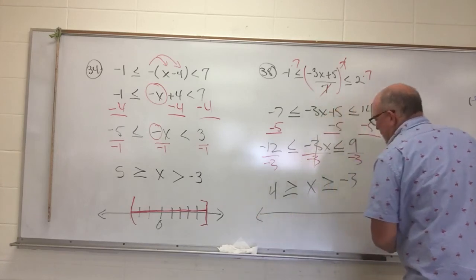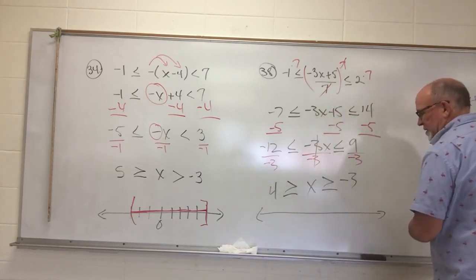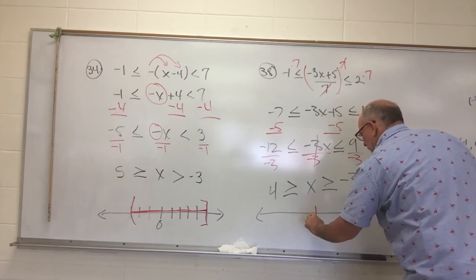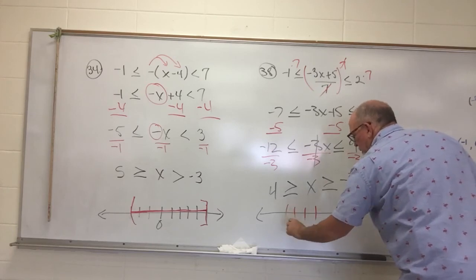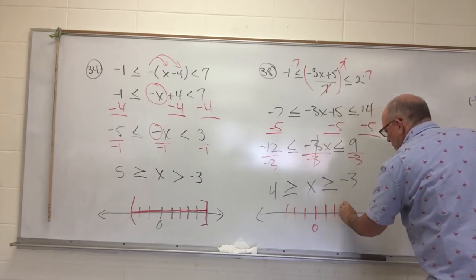Find 0 for me. Negative 1, 2, 3. Positive 1, 2, 3, 4.